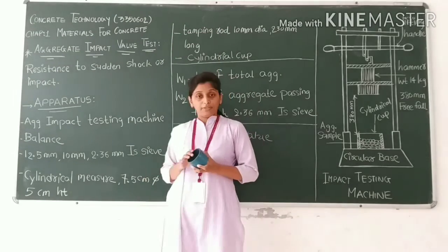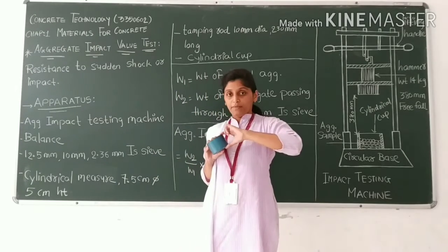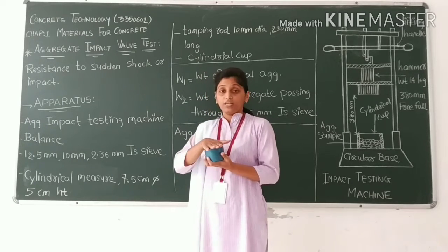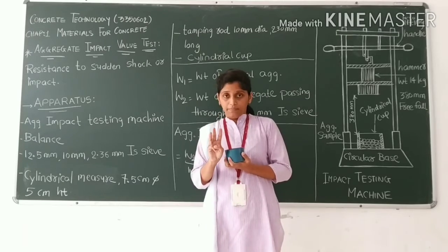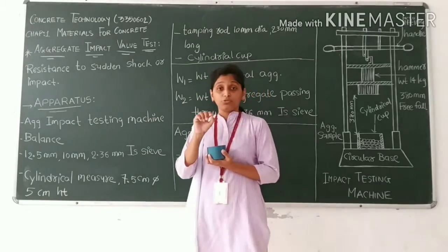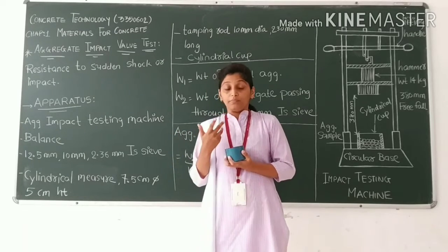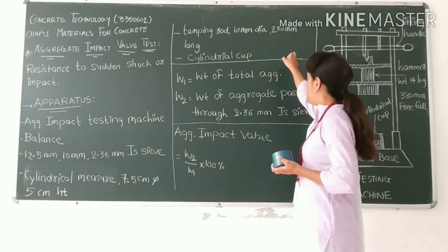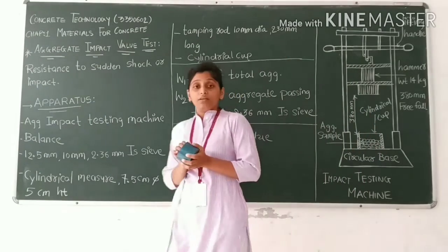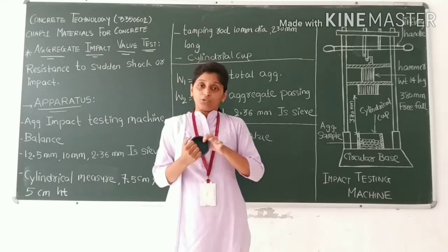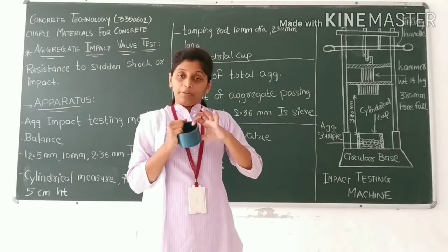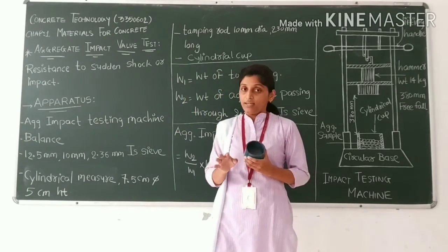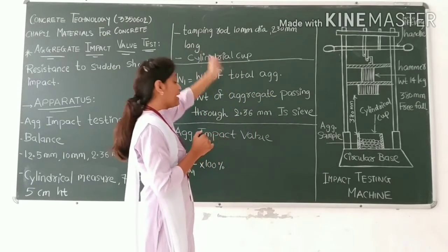The selected aggregate sample is filled into the cylindrical measure, which has a diameter of 7.5 cm and height of 5 cm. It is filled in three layers, each layer tamped with 25 blows of the tamping rod.